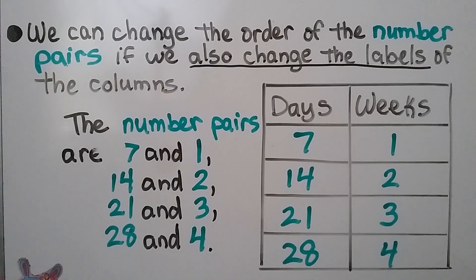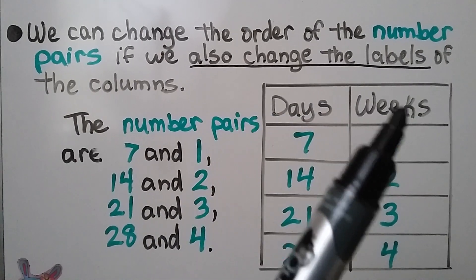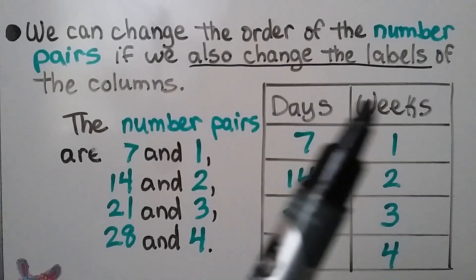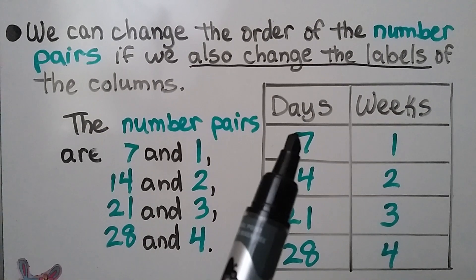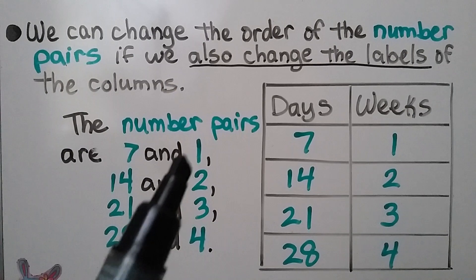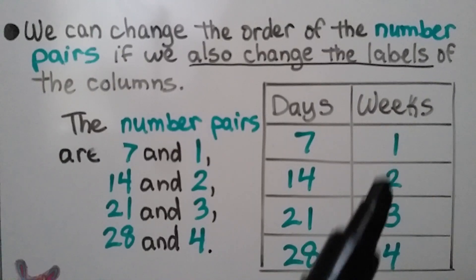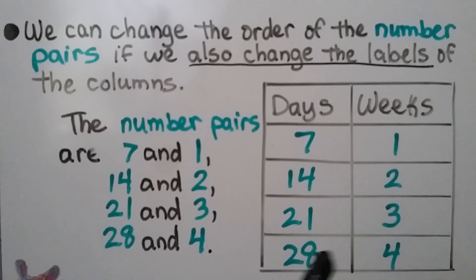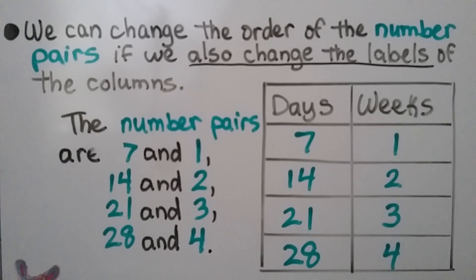We can change the order of the number pairs if we also change the labels of the columns. Before, this was weeks and that was days. If we put days first and then weeks, now we have seven days and one week. Our number pairs would change order: we'd have 7 and 1, 14 and 2, 21 and 3, and 28 and 4. It's the same numbers, just in a different order because we changed the labels.